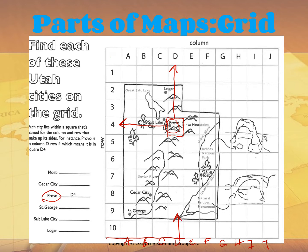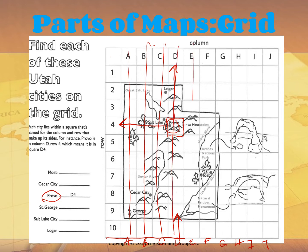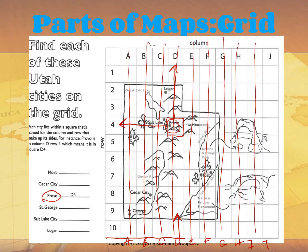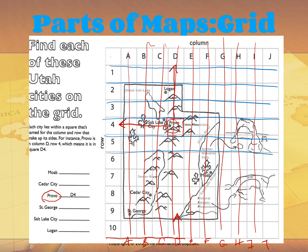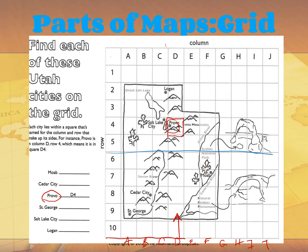I should mention again — I talked about lines of latitude and longitude. These letters represent long lines here, so they are lines of longitude. And these numbers represent lines that are like a rung on a ladder, so they represent lines of latitude.